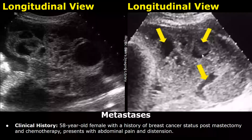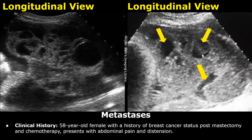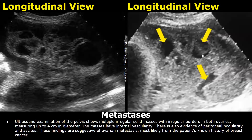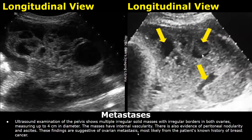Now we will look at the report for ovarian metastasis. The clinical history was a 58-year-old female with a history of breast cancer status post-mastectomy and chemotherapy presenting with abdominal pain and distension. The findings show ultrasound examination of the pelvis with multiple irregular solid masses with irregular borders in both ovaries. Then there is the measurement of the mass. The masses have internal vascularity. There is also evidence of peritoneal nodularity and ascites. These findings are suggestive of ovarian metastasis, most likely from the patient's known history of breast cancer.